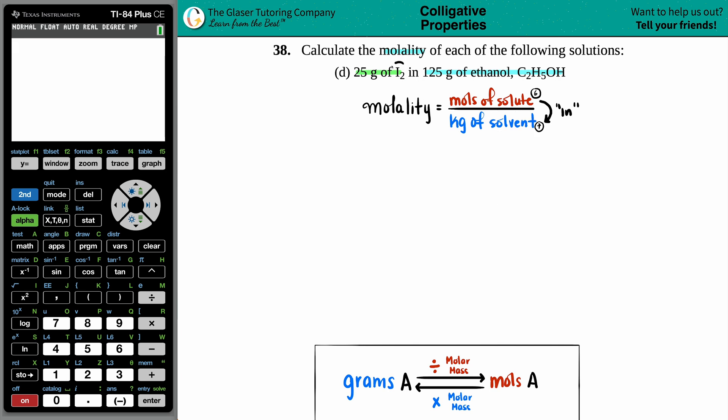Now in this case, they said that the I2 was placed in the ethanol. So use your context clues. Since the I2 is being placed in the ethanol, the I2 has to be the solute, and the ethanol has to be the solvent.